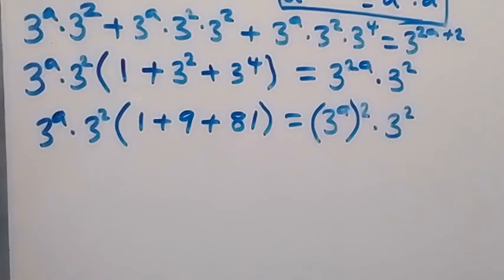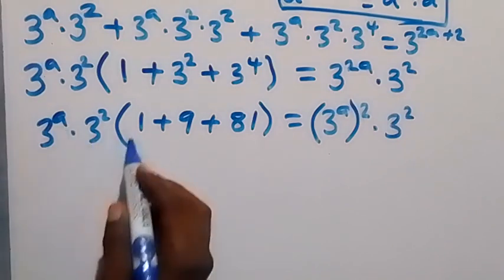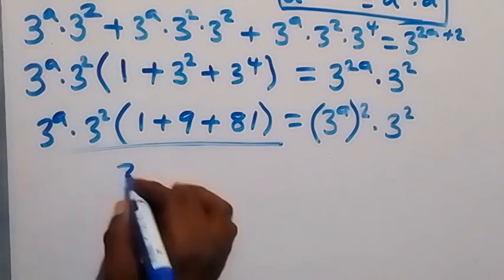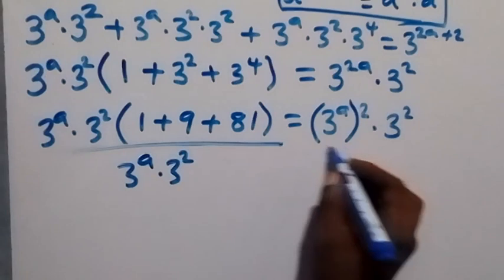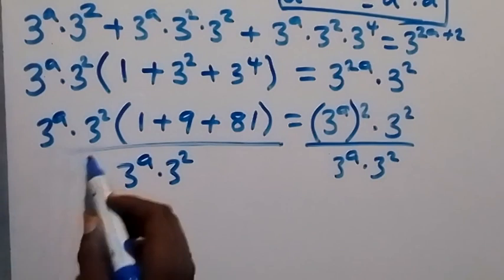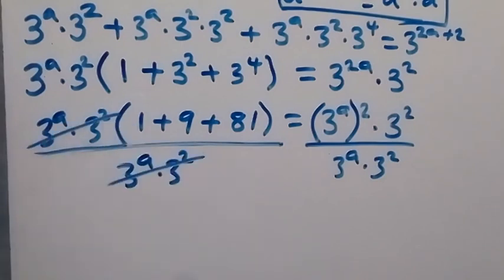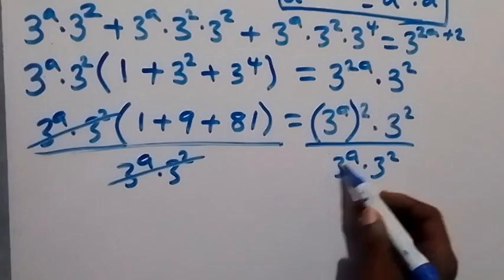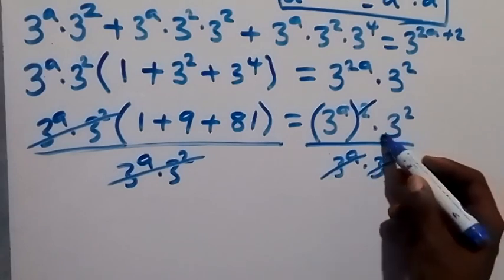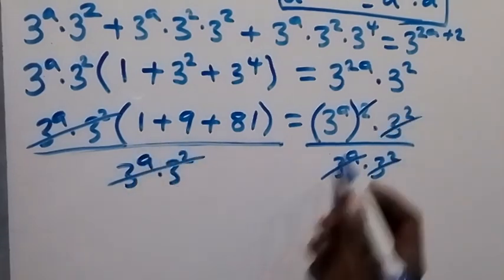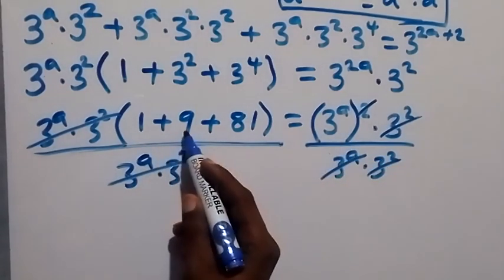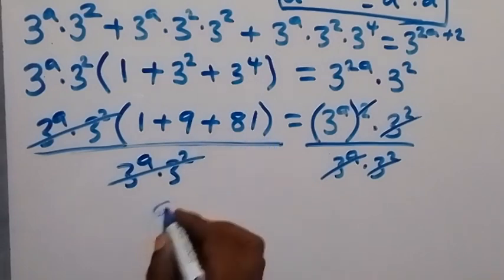Now from here we can also divide both sides by 3 raised to power a times 3 raised to power 2. Here also divide by 3 raised to power a times 3 raised to power 2. So this cancels out, and 3 raised to power a cancels one of the 3 raised to power a here. Then 3 raised to power 2 cancels 3 raised to power 2. What we have left now on this side is 3 raised to power a, and on this side that's 1 plus 9 equals 10, plus 81 — that's 91.